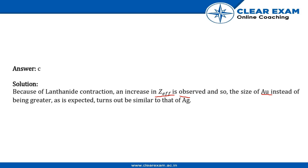The size of Au, which is gold, instead of being greater as expected, turns out to be similar to that of Ag. Hence, our answer is C.